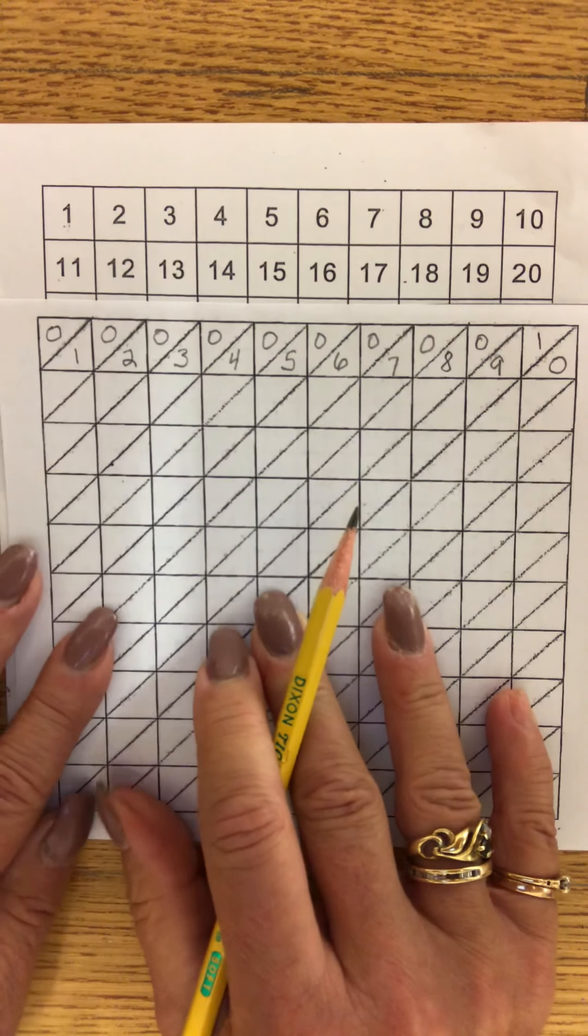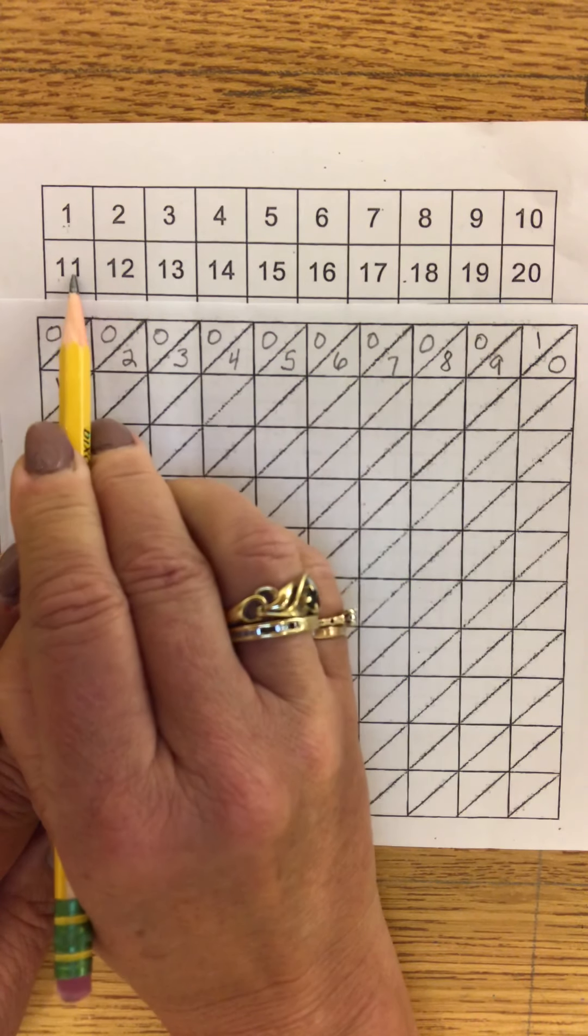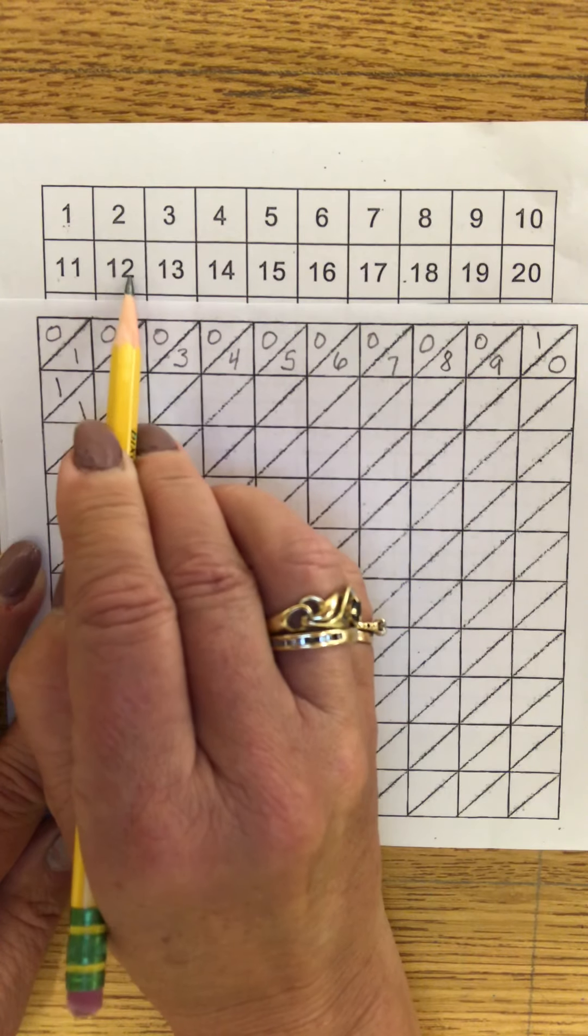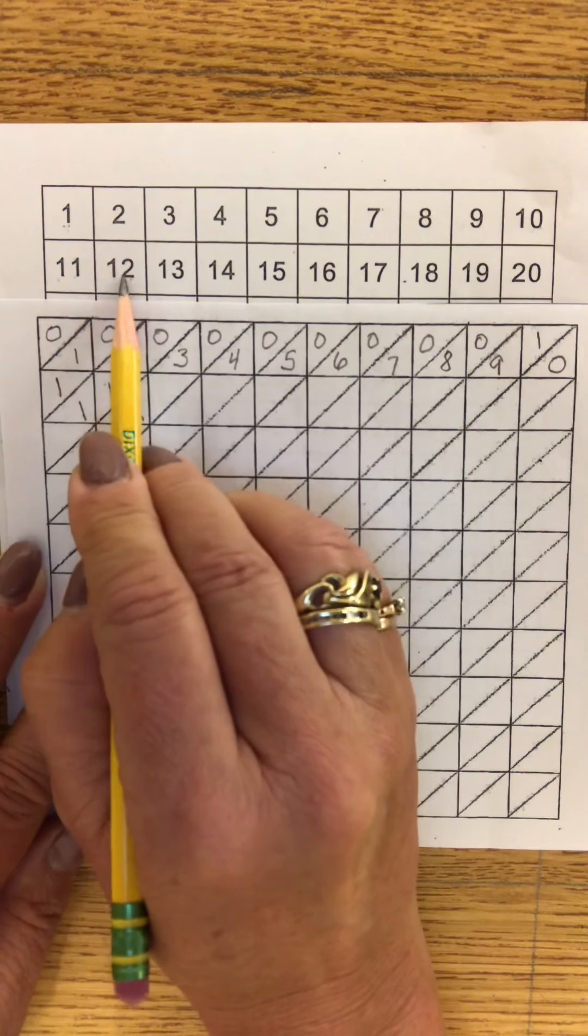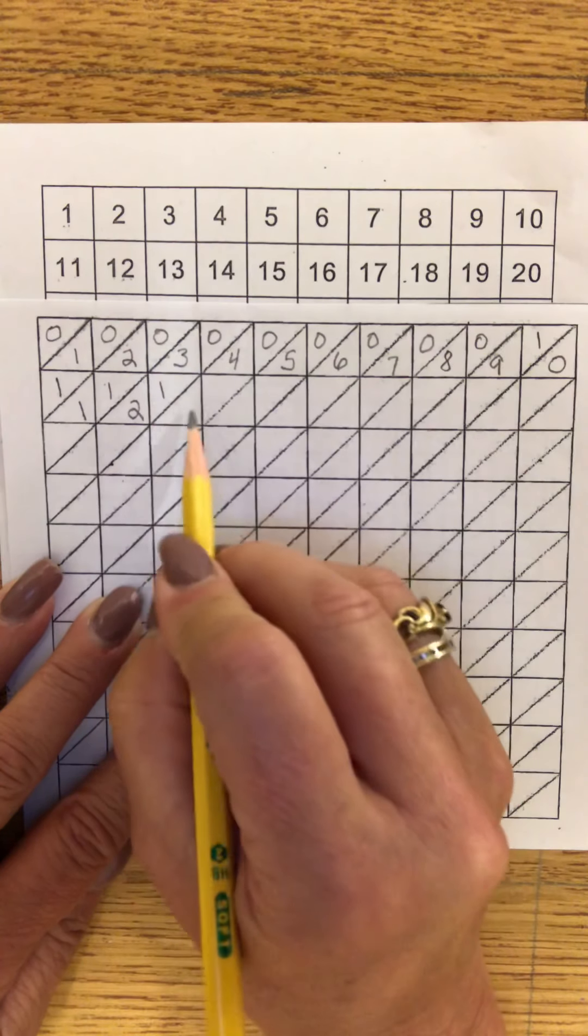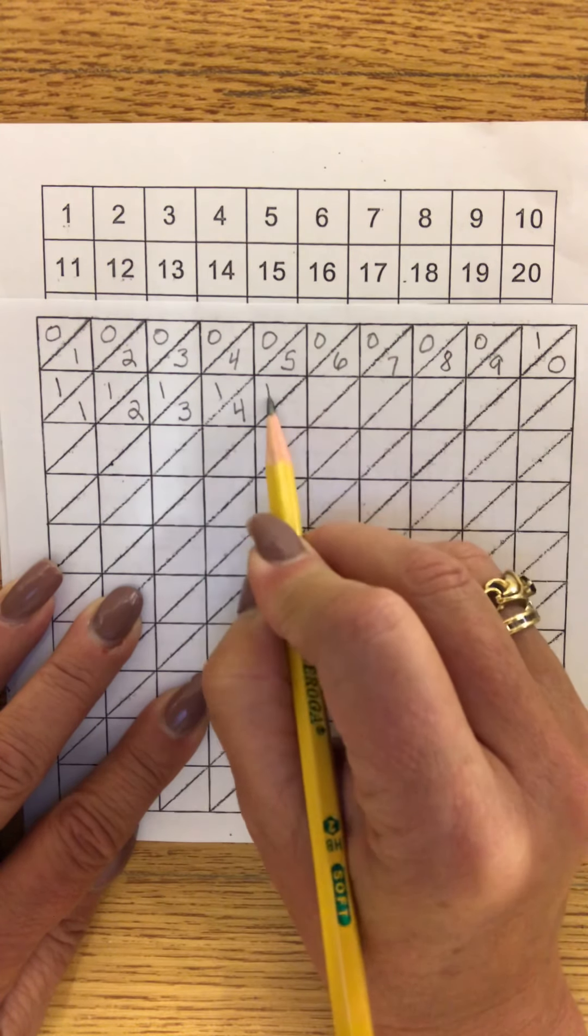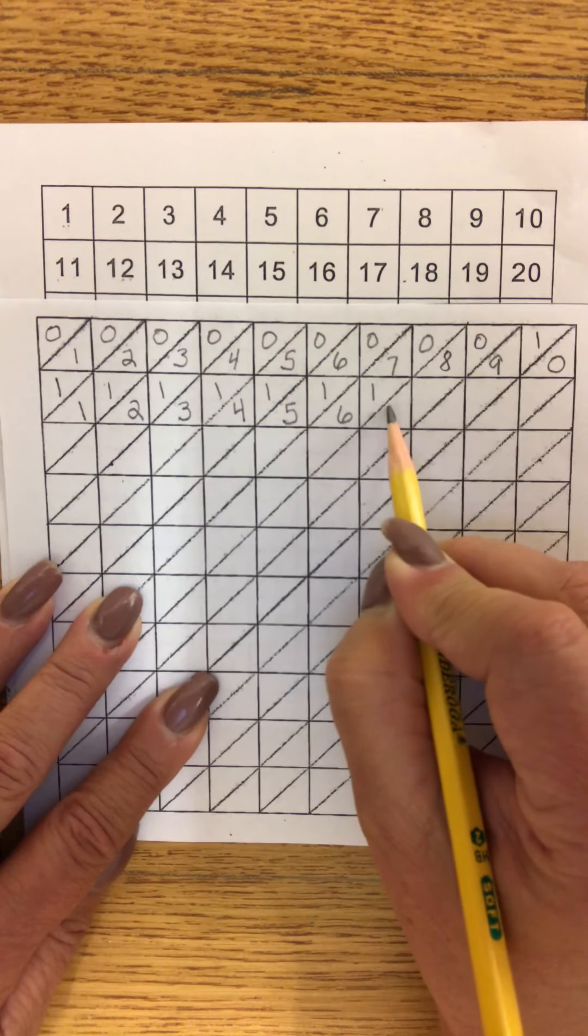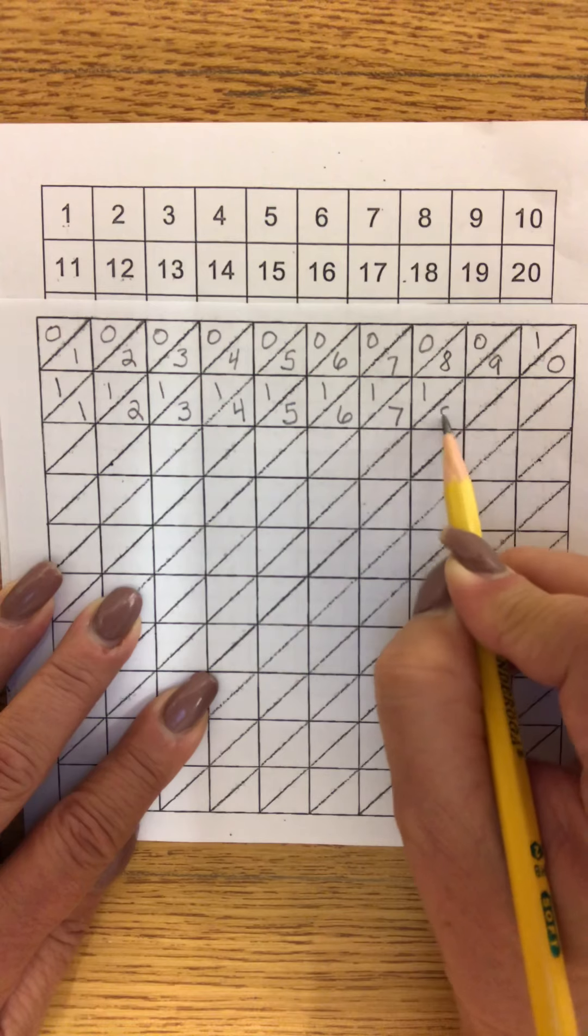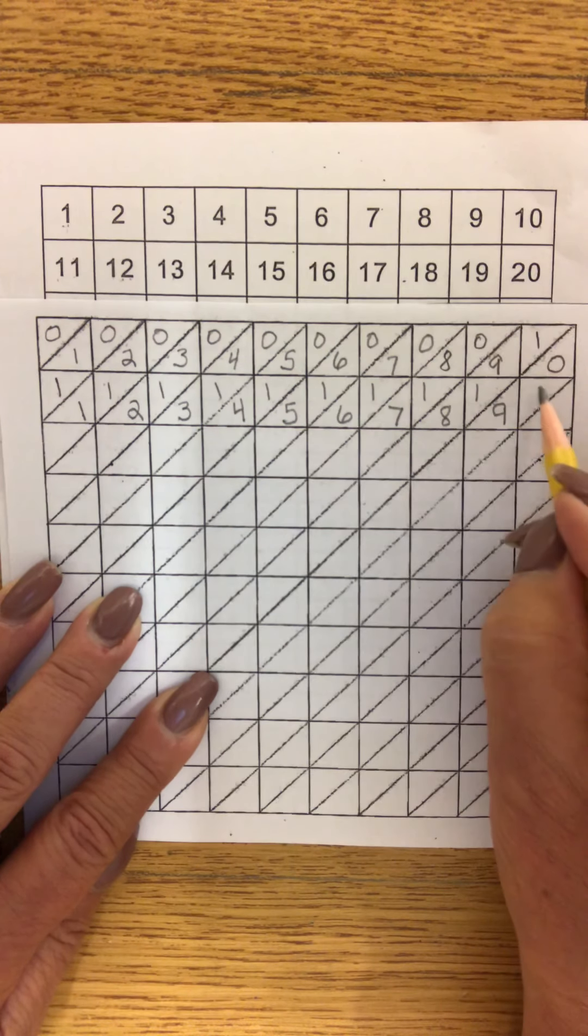Now let's look at the next row. The number eleven, one ten, one one. One ten plus one equals eleven. One ten, two ones. Ten plus two equals twelve. Thirteen, one ten, three ones. One ten, four ones. One ten, five ones. One ten, six ones. One ten, seven ones. One ten, eight ones. One ten, nine ones. And now we're at 20. Two tens, two times ten is 20, zero ones.